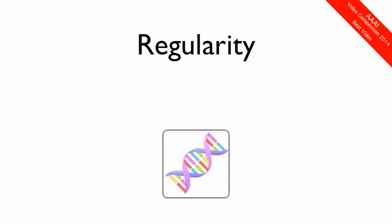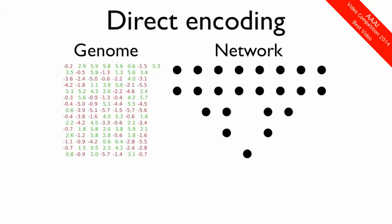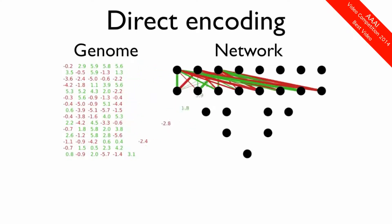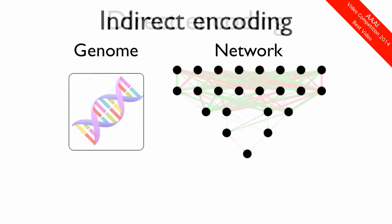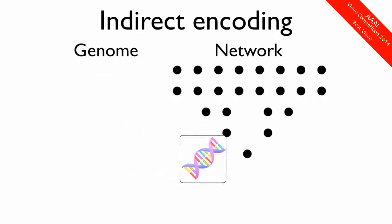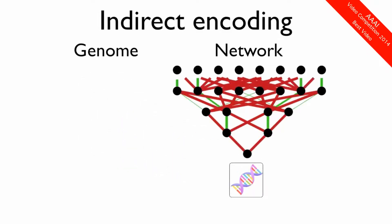To encourage regularity, we make use of an indirect encoding, called HyperNEAT. The classic approach is to use a direct encoding, in which every element in the genome encodes for a single feature of the network. This method leads to highly irregular networks. In an indirect encoding, the genome instead forms the basis of a developmental process, allowing for information to be reused, resulting in more regular networks.